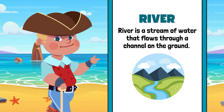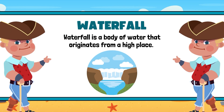The next one is the river. A river is a stream of water that flows through a channel on the ground. Next is the waterfall. A waterfall is a body of water that originates from a high place.